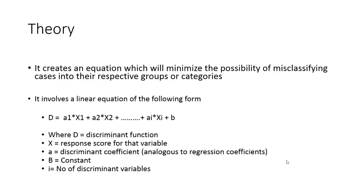The computational method is like this. We create an equation which minimizes the possibility of misclassifying cases into respective groups. So iteratively we minimize the misclassification and we choose the best set of variables, the best set of combination weightage or the weights, in order to ensure that the misclassification is minimized.